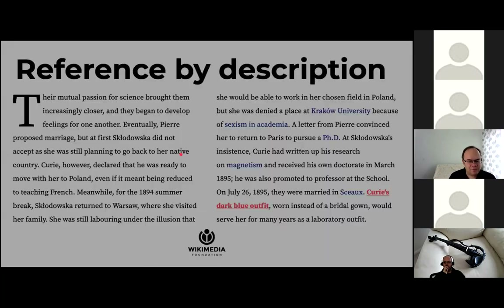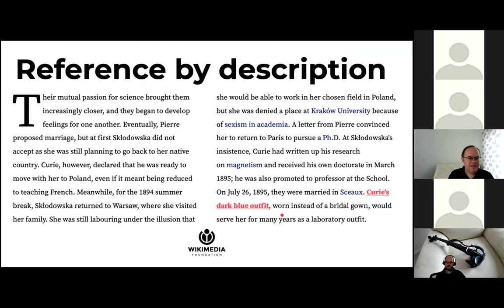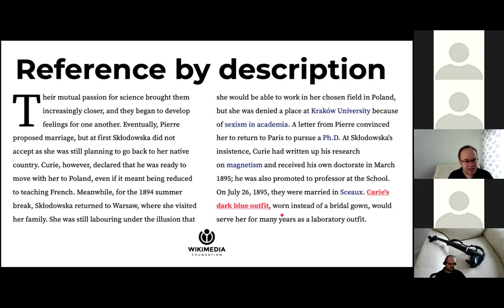The second limitation is reference by description. The text mentions 'Curie's dark blue outfit.' We could create a Wikidata item for it, but that's not practical for every thing mentioned in text. Natural language is good at creating phrases that refer to things by description — like 'Marie Curie's right hand' or 'Pierre Curie's wedding band' — without needing to create an item with an ID in advance. Wikidata can only talk about things where you create an item beforehand.